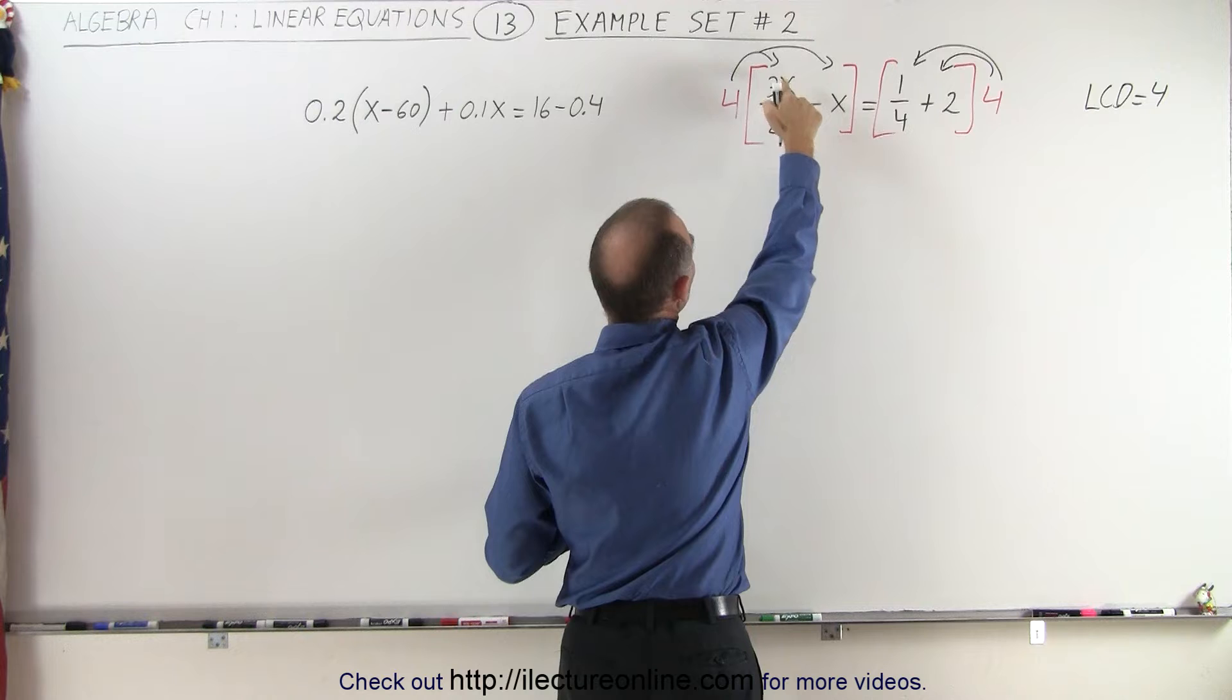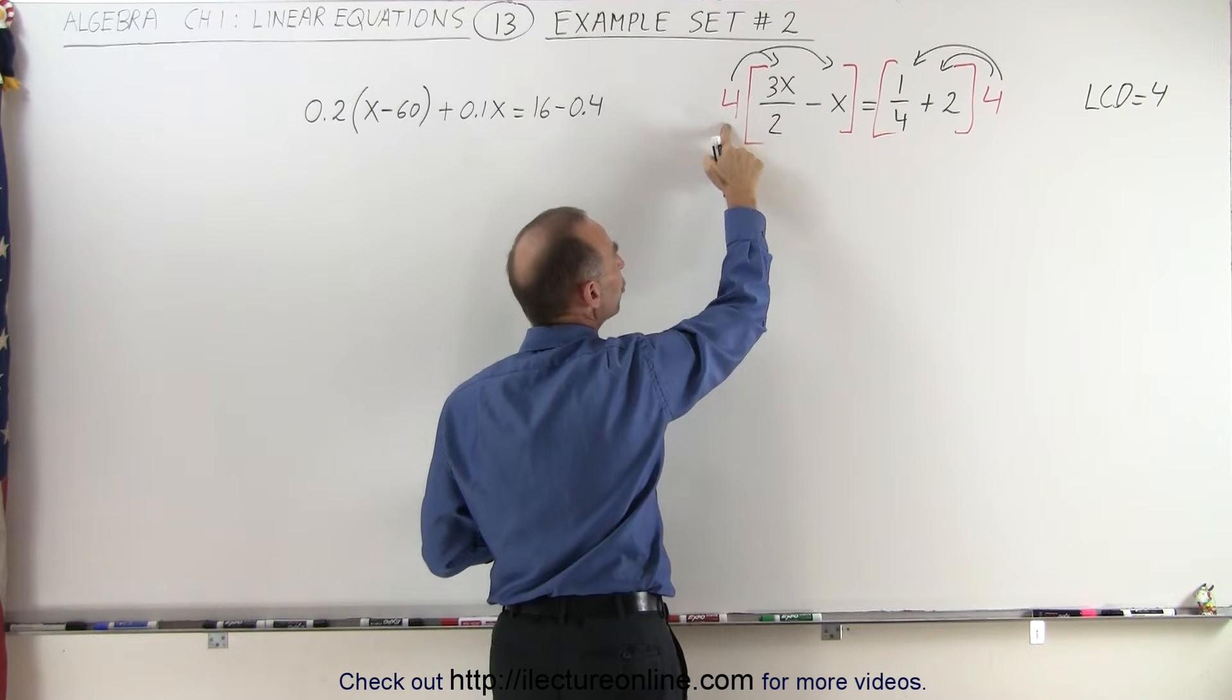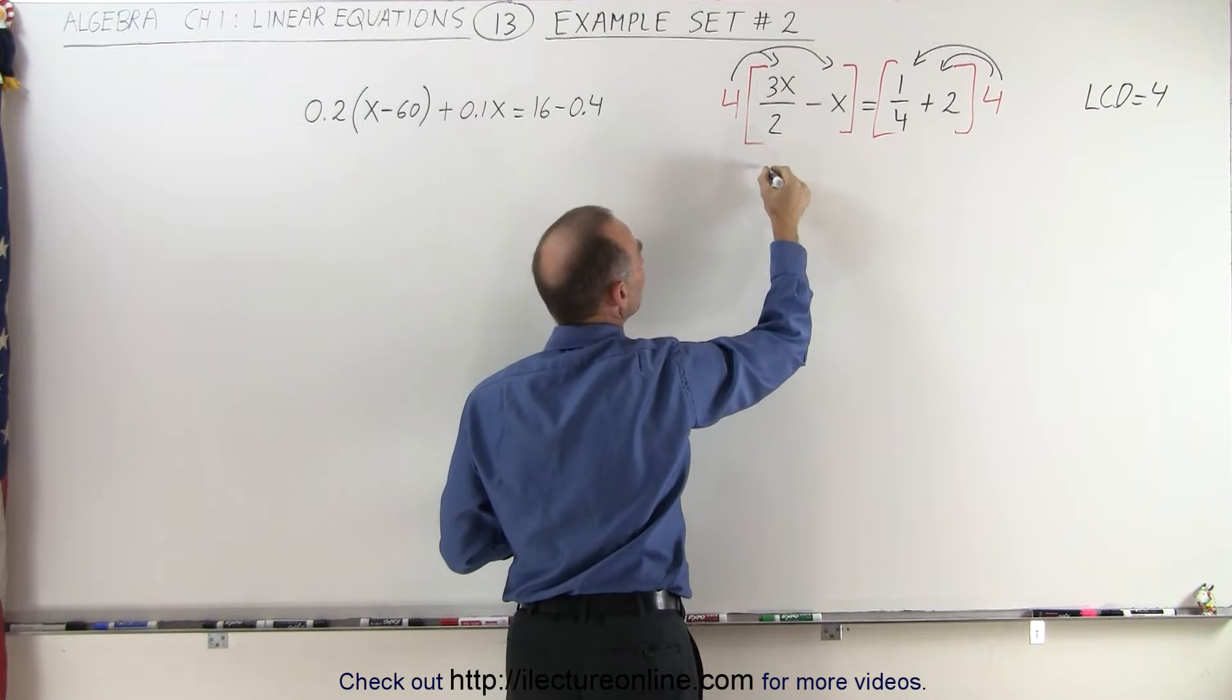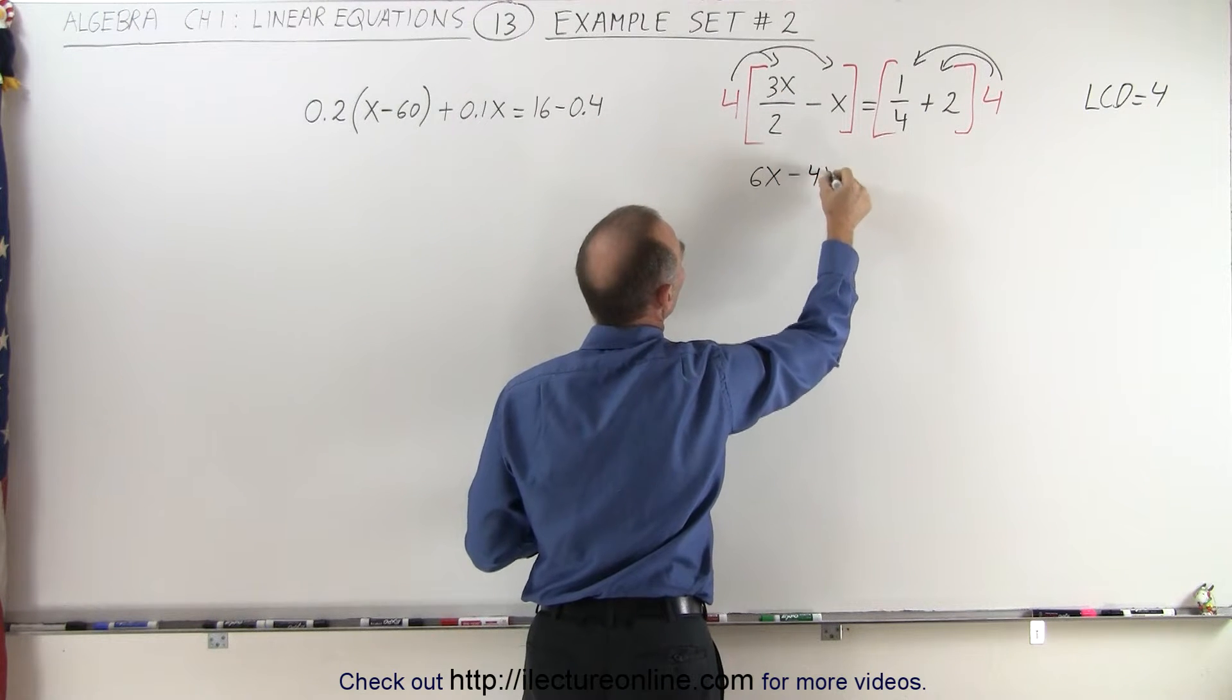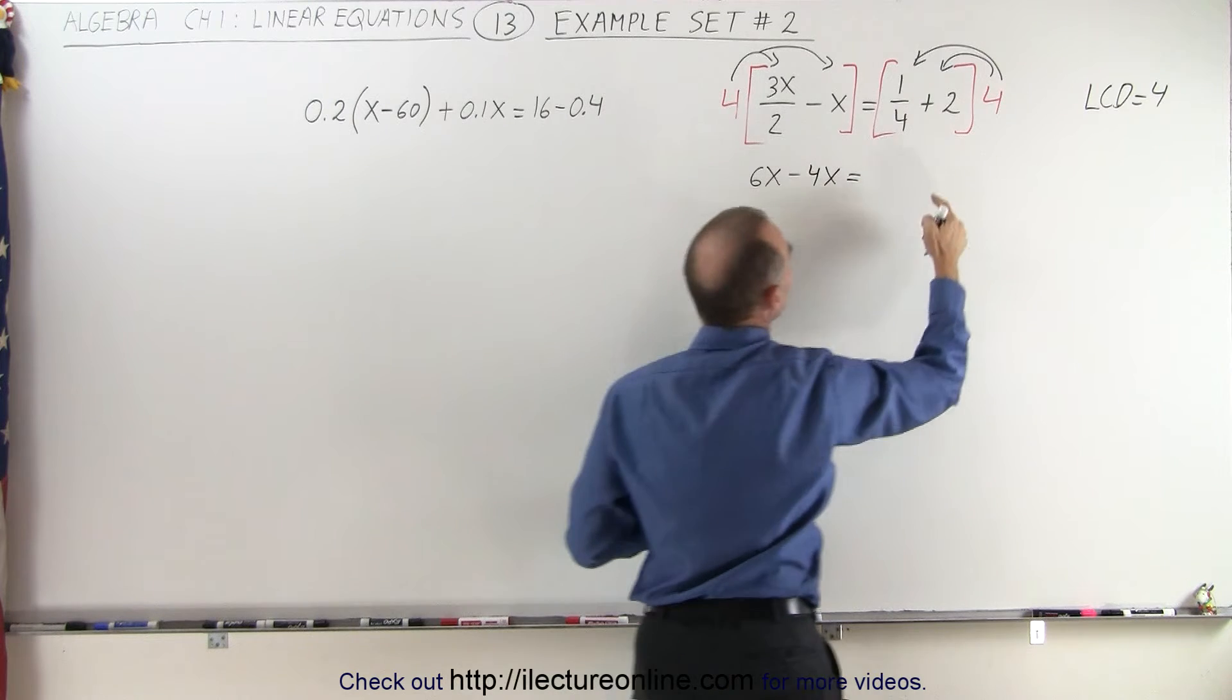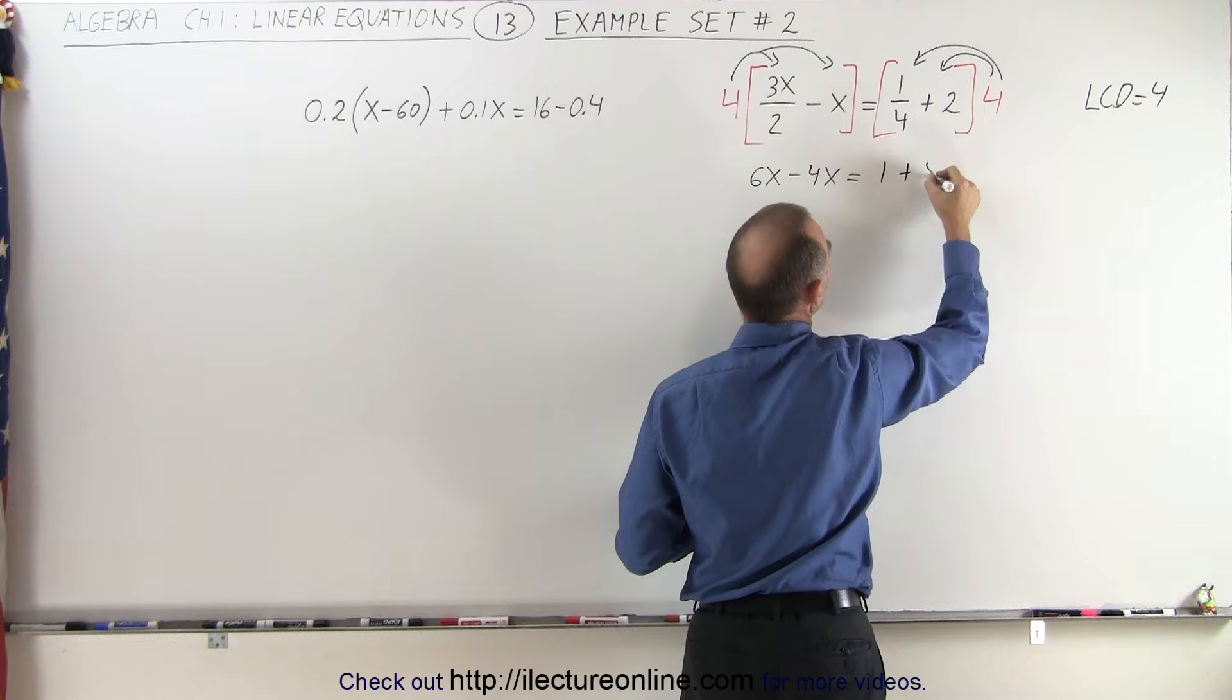So 4 times 3x over 2, the best way to do that is to say 2 goes into 4 two times, 2 times 3x gives me 6x. 4 times minus x is minus 4x. Here, 1 quarter times 4 that gives me 1, plus 2 times 4, that gives me 8.